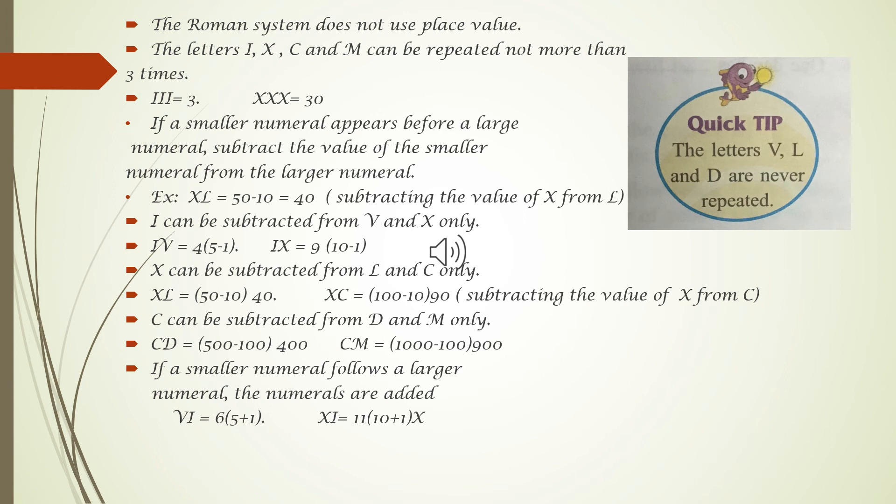I can be subtracted from V and X only. I value is smaller than V and X. So, when I is placed before the greater value, we need to subtract. IV is 5 minus 1, equal to 4. IX is 10 minus 1, equal to 9.